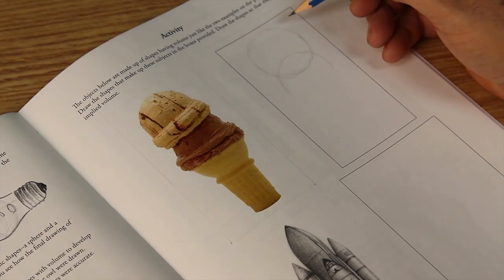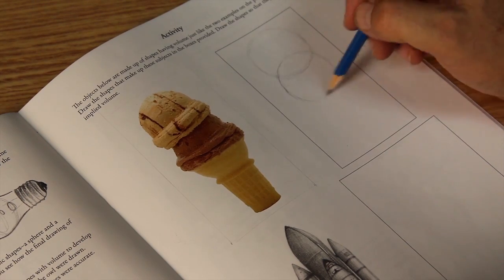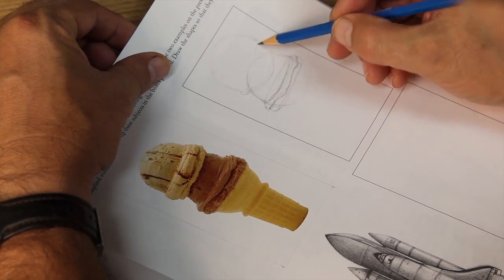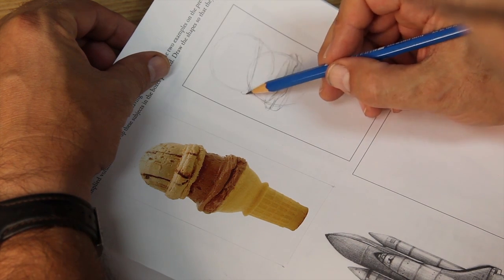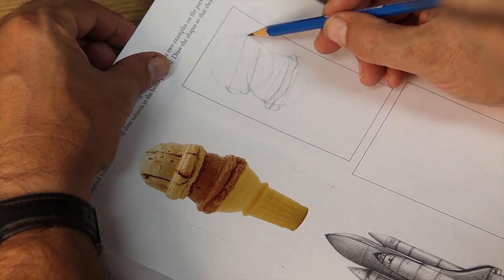Hello, and this drawing exercise I did for the Art Instruction Schools is just an example of drawing from volumes, taking shapes, rough shapes, and then refining them over and over until you get to the desired effect.